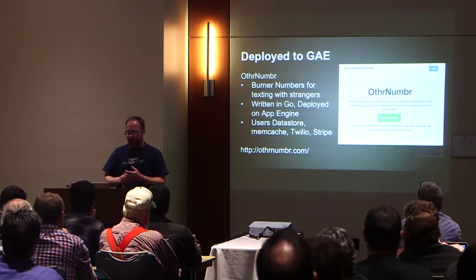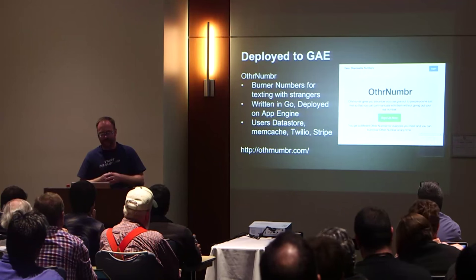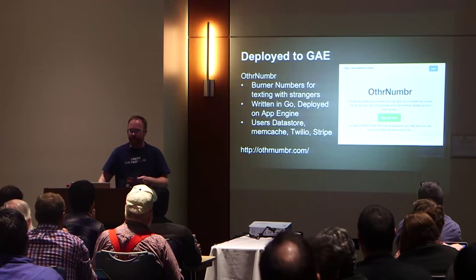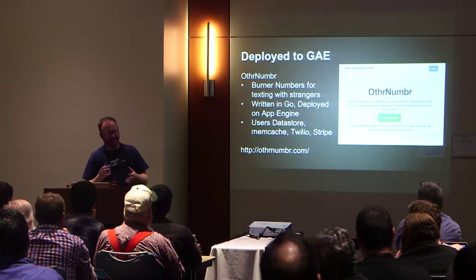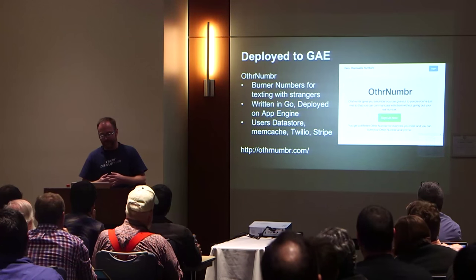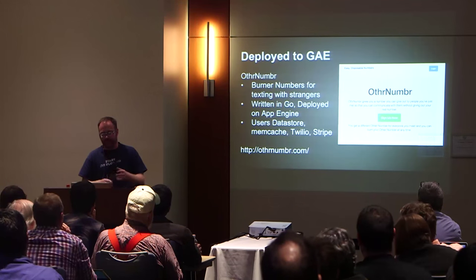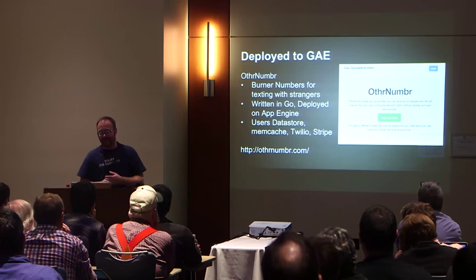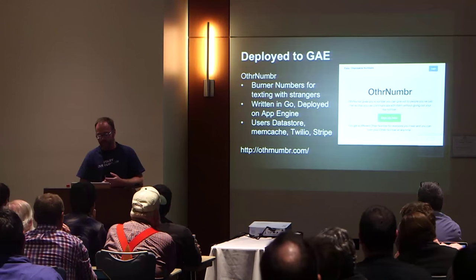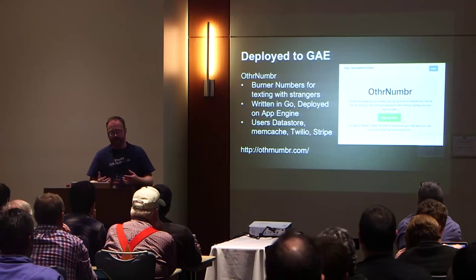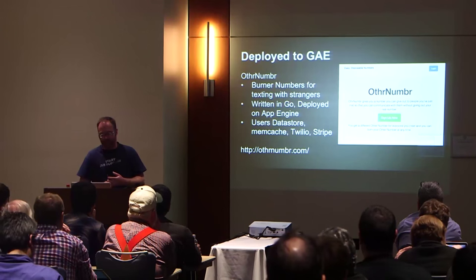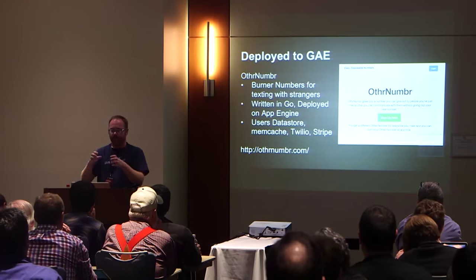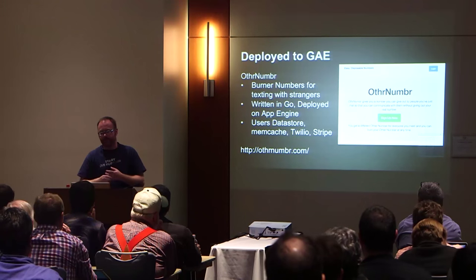I also built another thing called Other Number — an idea I had for basically temporary phone numbers you could use. If you want to sell something on Craigslist or you met somebody and weren't quite sure you wanted to give them your actual phone number, you could use Other Number. It uses pretty much all the features of the Google App Engine platform. It's been running for months while I've been paying attention to other things and it still works. It's a really great platform for web development, and Google App Engine is very affordable right now — easy to get started.